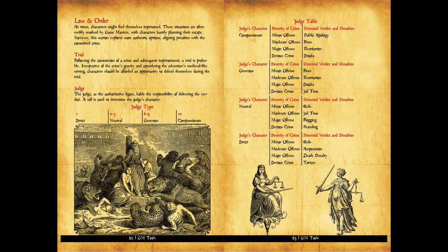The severity of the crime is decided by the game master. It could be a minor offense, a moderate offense, a major offense, or a serious crime. These four categories apply regardless of the type of judge. The only difference is that if the judge is compassionate, generous, neutral, or strict, it will change how the verdict is carried out. A compassionate judge has potential verdicts and penalties such as public apology, fines, restitution, and stocks. Basically, you get off easily — nothing very serious happens to you. The characters can pay a fine and just move on with their adventure.